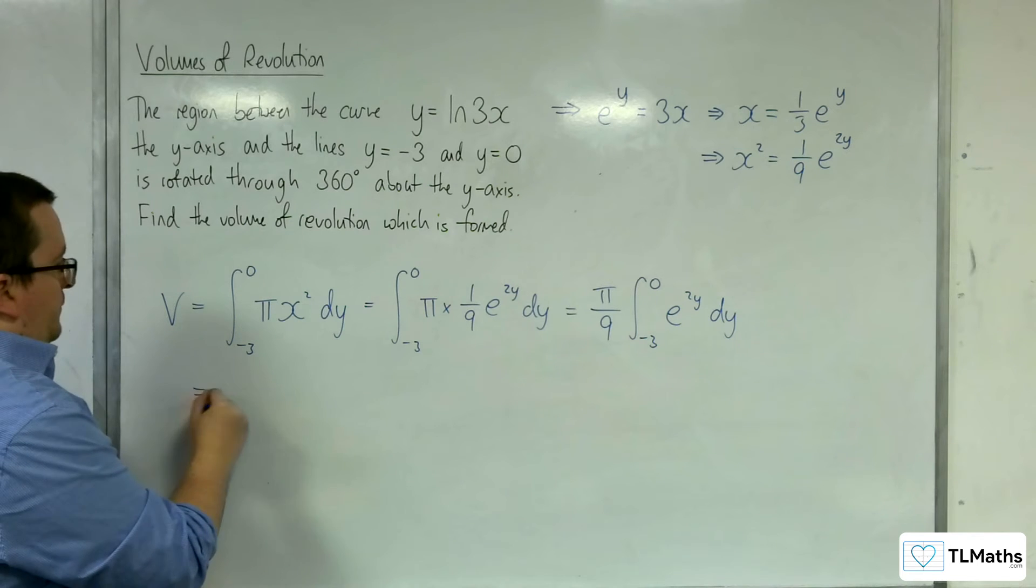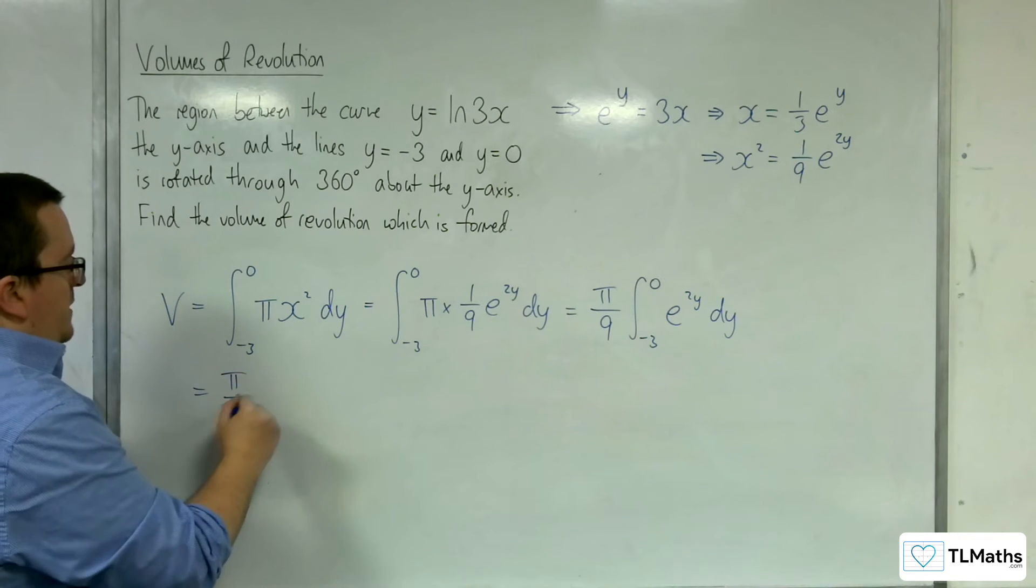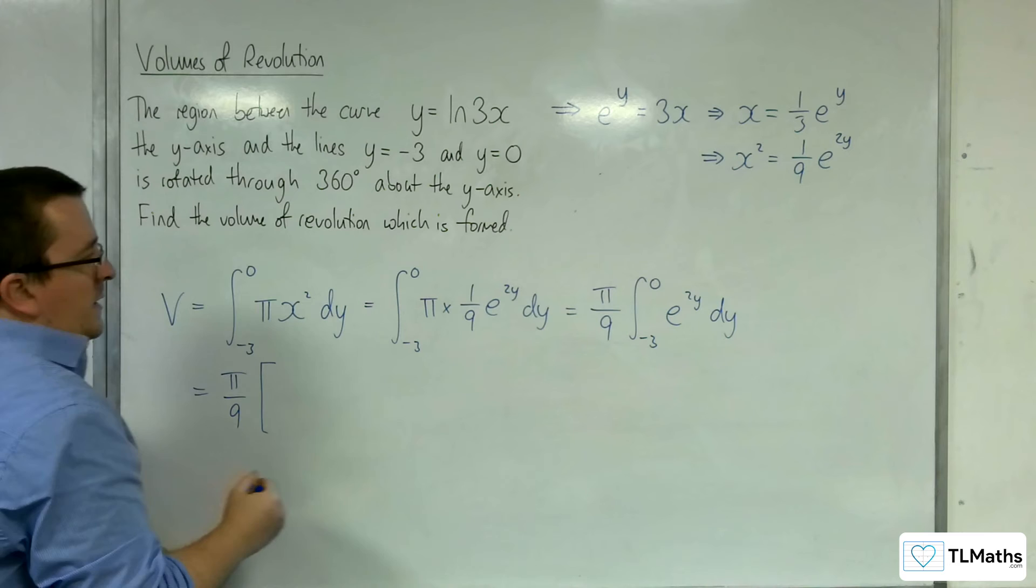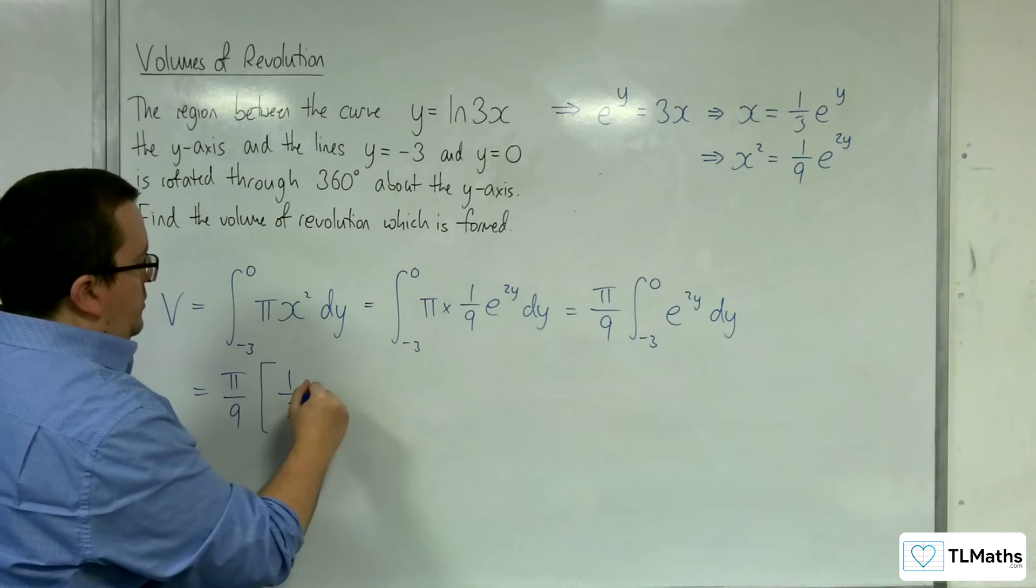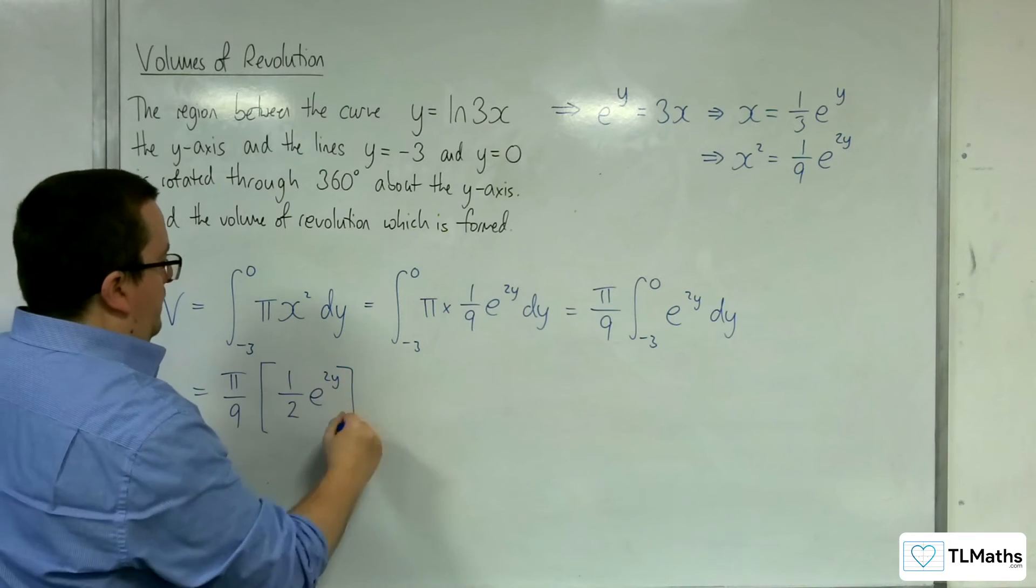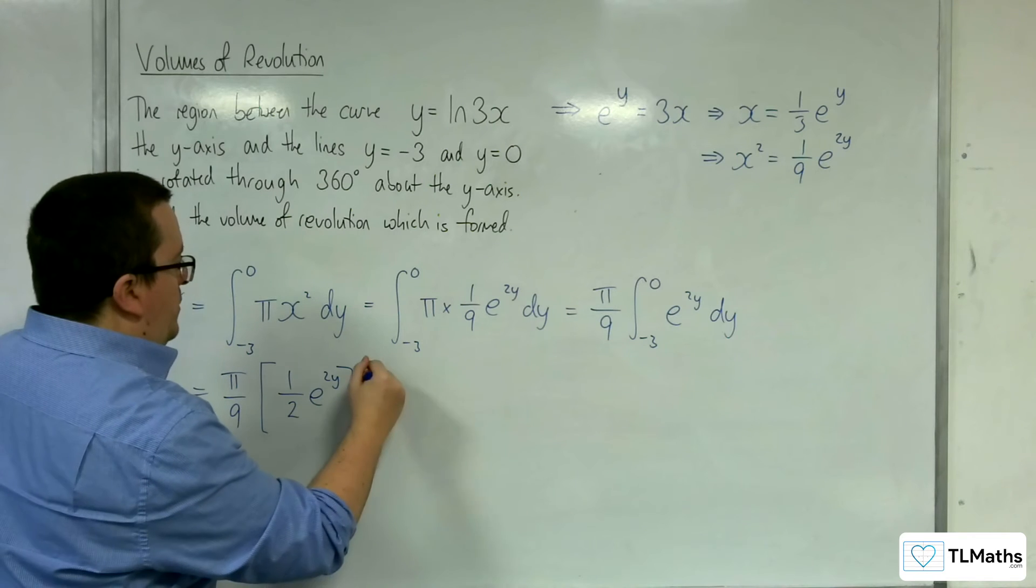Now I can integrate. So pi over 9 times e to the 2y is going to integrate to 1 over 2 e to the 2y, evaluated between minus 3 and 0.